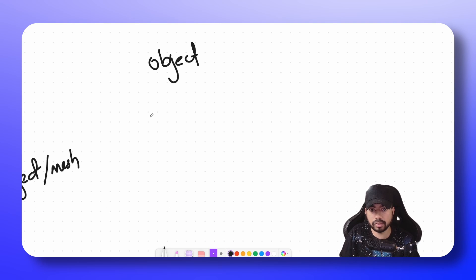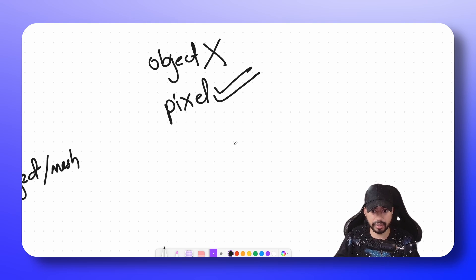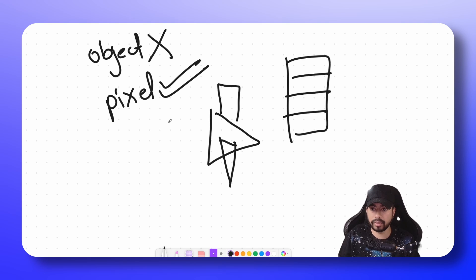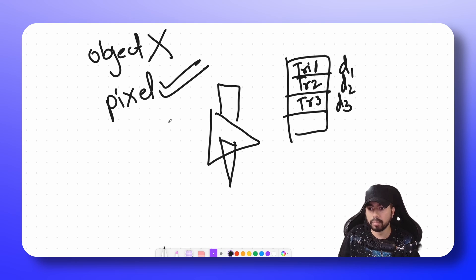To solve this we need something that works not at the object level but at the pixel level. When we sort objects by depth we have a list of objects — triangle 1, triangle 2, triangle 3 — based on their depths d1, d2, d3. But instead of that, what we want is a list that is on a per-pixel basis.